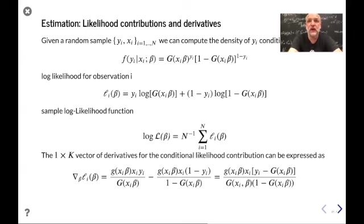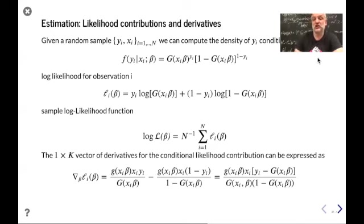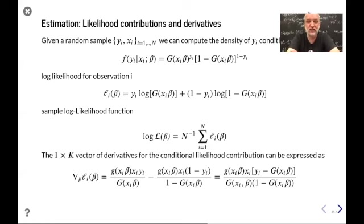In order to estimate, we need data. We're going to have a random sample of both y and x, with n observations, and we assume that these individual observations indexed by i are randomly distributed. Given the random sample, we can compute the density of y_i conditional on an observation of explanatory variables x_i. We have already previously specified the conditional density for binary outcome models, with probabilities specified by some model — the probability for y equal to 1 would be G(x'beta) in this case.